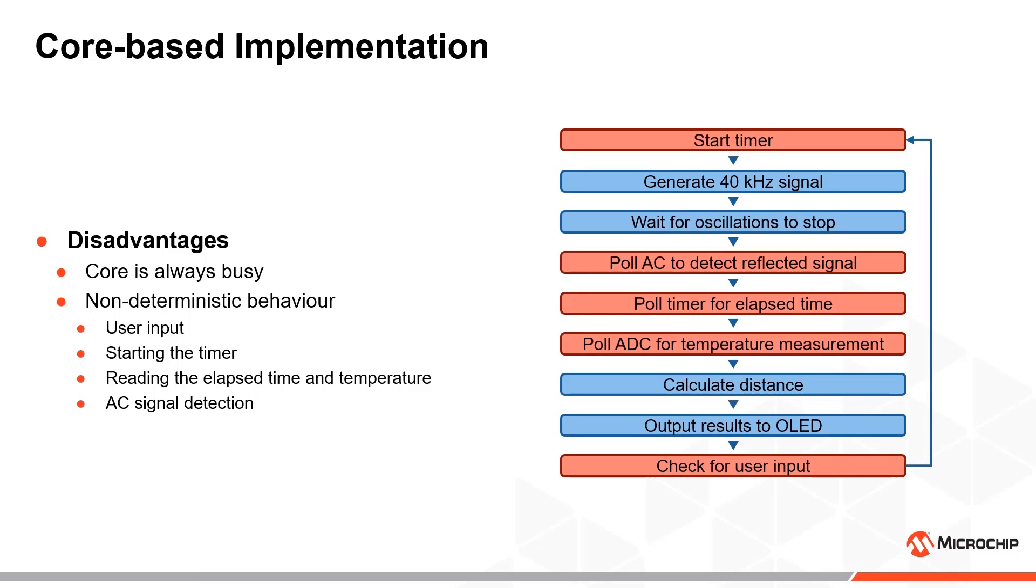The use of analog comparator polling to detect the return signal could cause us to miss some of the signal peaks, depending on how the waveform lines up with our sampling points. Even at the highest supported polling rate, it is likely that we would miss several peaks, which would cause measurement errors of several centimeters.